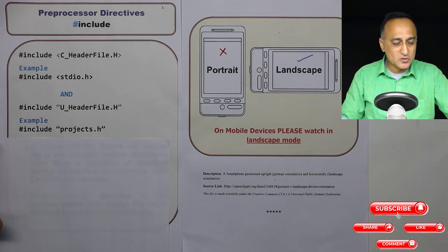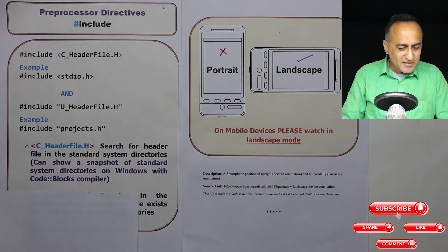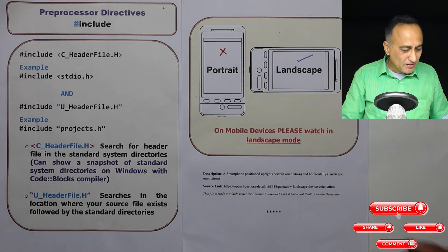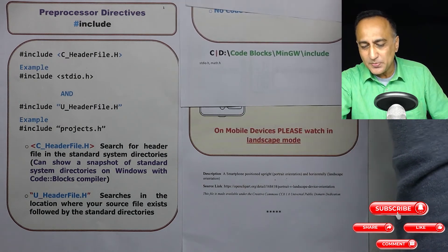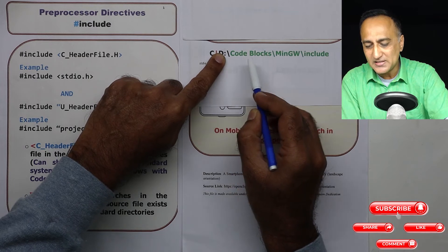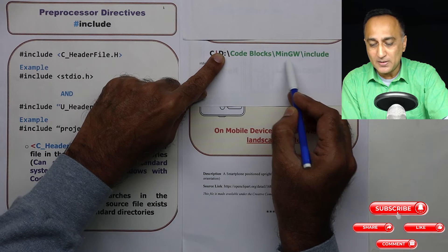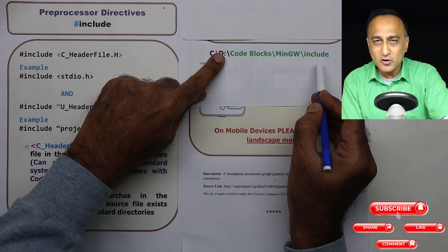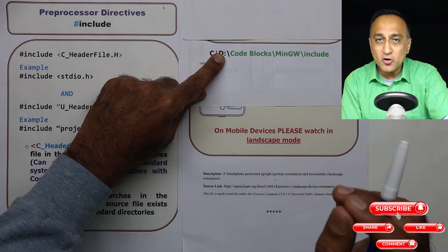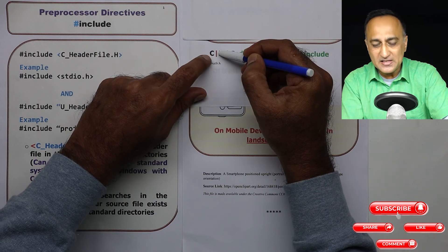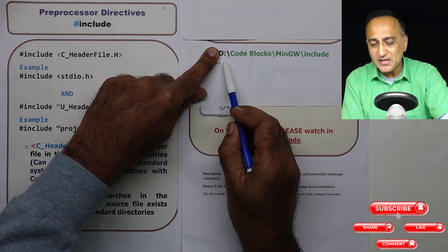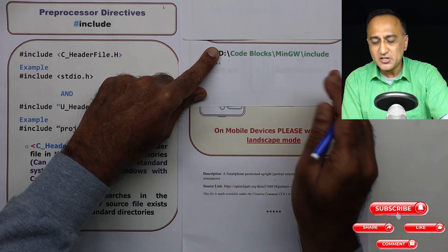Let's try to understand the difference between these two header files. In the first format using angular braces with C header file dot h, the C compiler starts searching for this file in a specific directory. Suppose you install Code Blocks on your C drive — it will start searching from C:\CodeBlocks\MinGW. Your stdio.h, math.h, string.h — all examples of standard header files provided by C — are going to be in that particular path. In my machine, I have installed it on the D drive, so my standard include files are going to be in D:\CodeBlocks\MinGW\include. That's the number one difference.